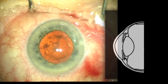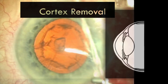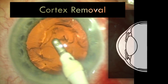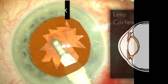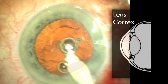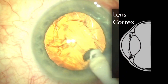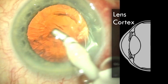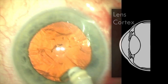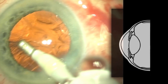Now that the bulk of the cataract has been removed, you can see that the red reflex is already significantly brighter. There's still some outer lens cortex that needs removing, and I'm using the irrigation and aspiration probe to remove it. I'm engaging the cortex, bringing the probe into the centre, and using the vacuum to peel away the cortex matter.